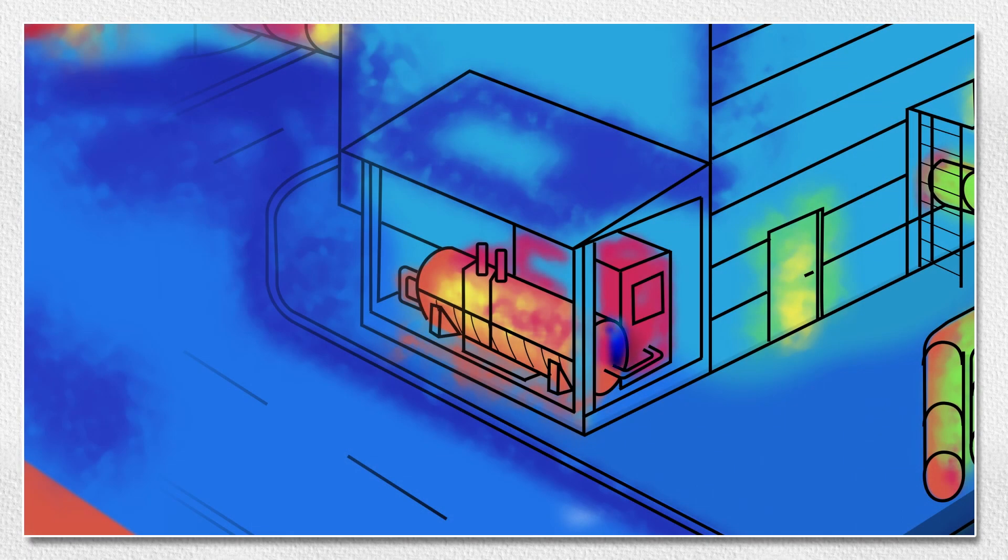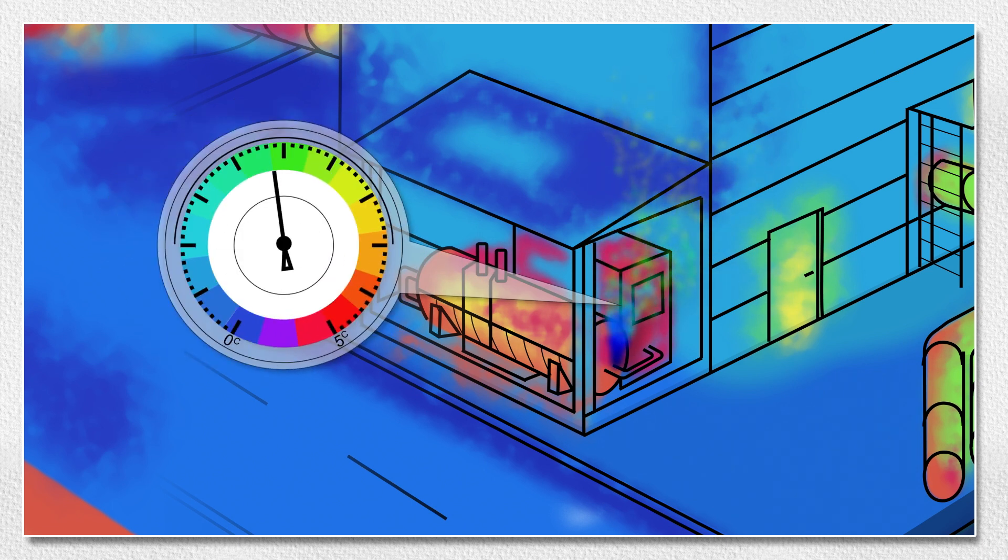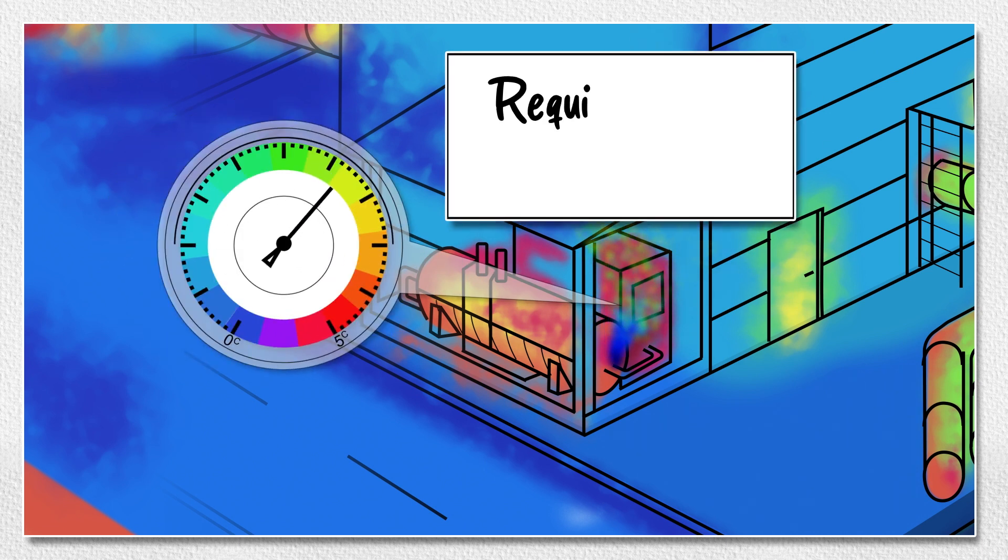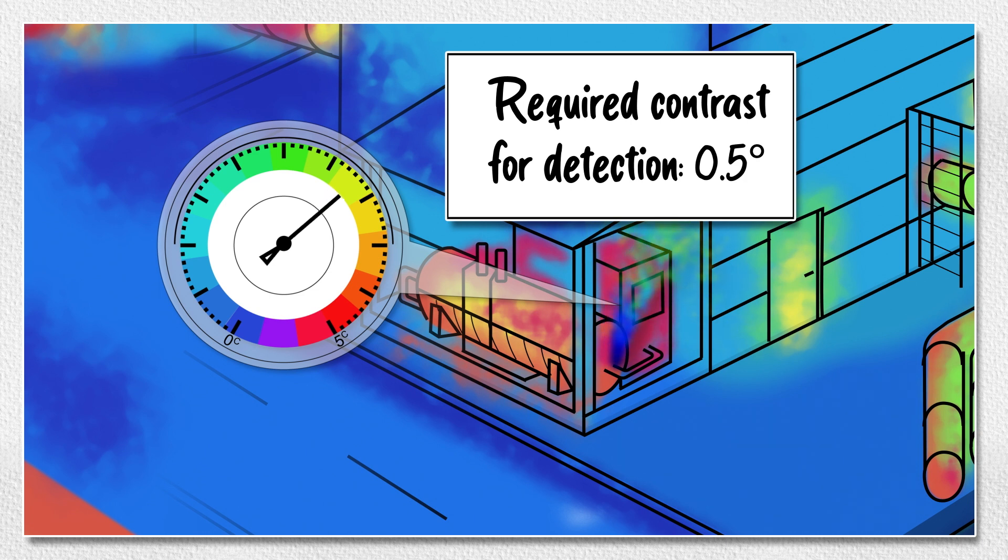When gas leaks, it quickly reaches temperature equilibrium with the surrounding ambient air. For an optical gas imager to detect a cloud, there needs to be a radiometric contrast of at least 0.5 degrees Celsius between the air and the background.